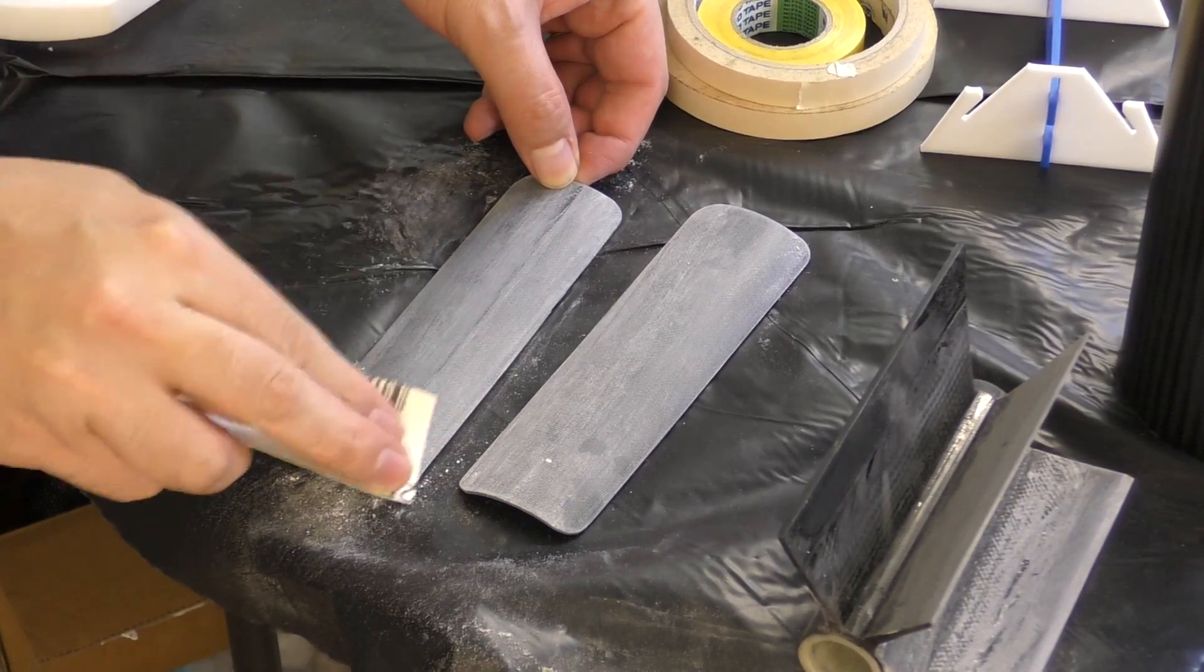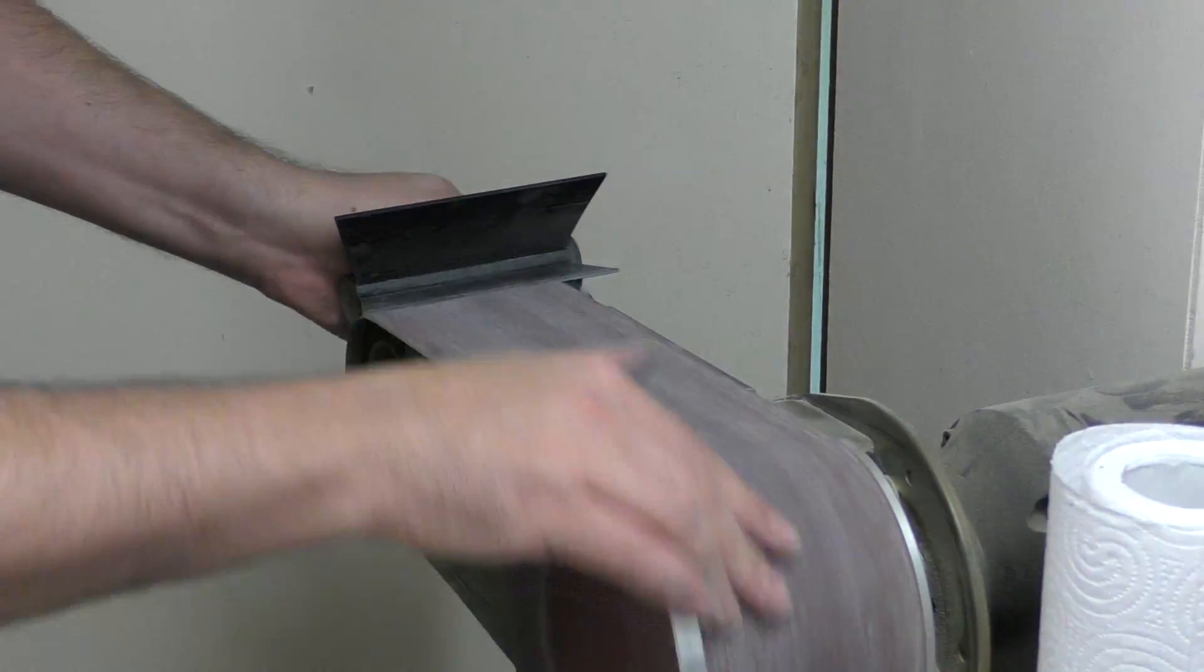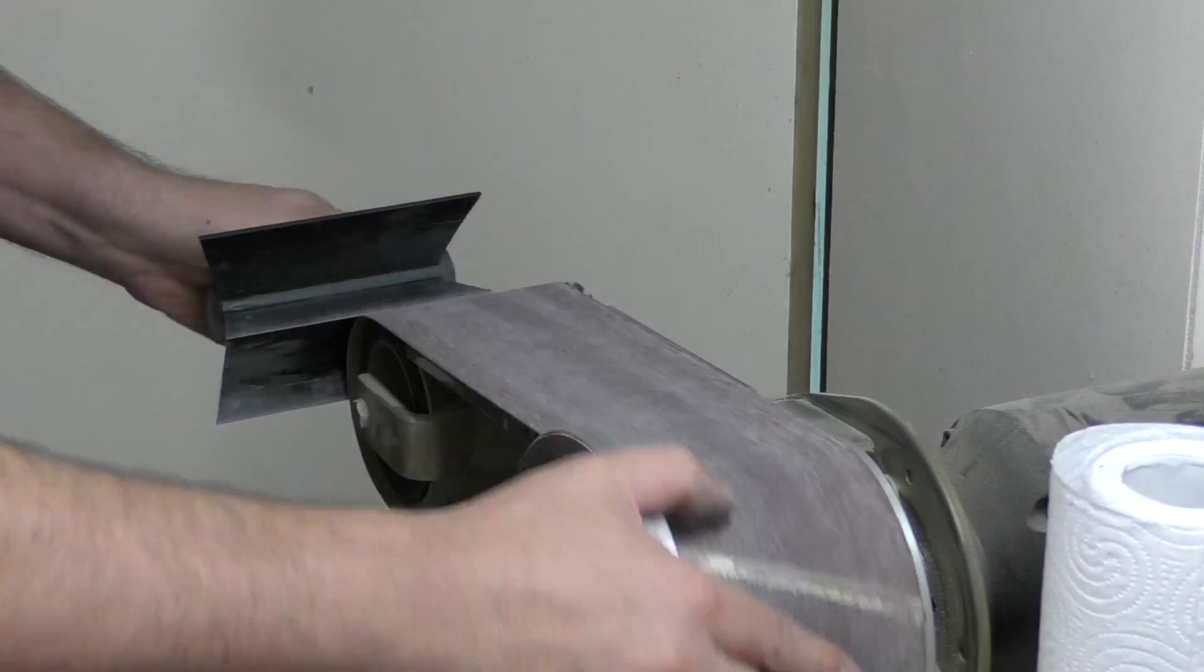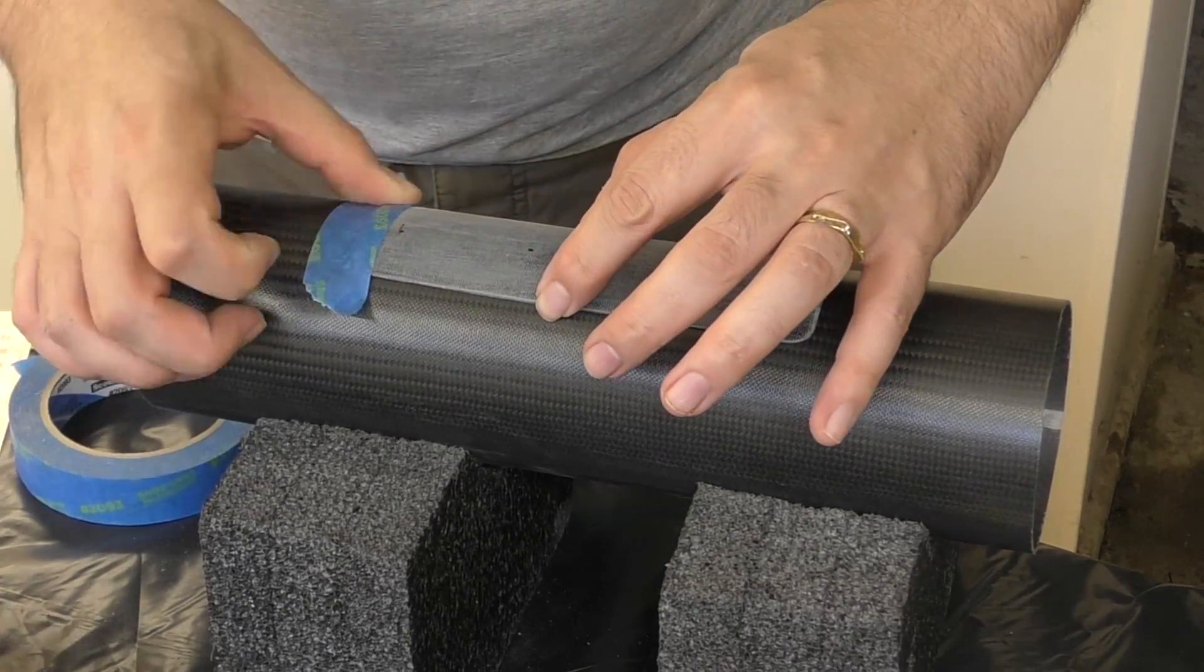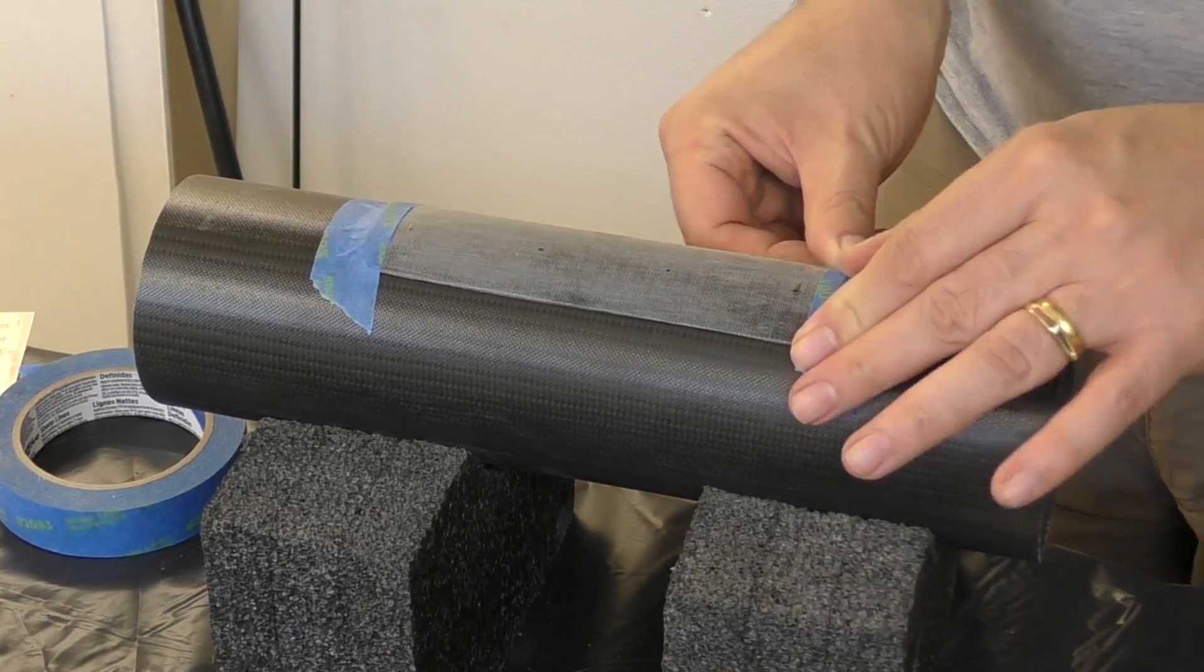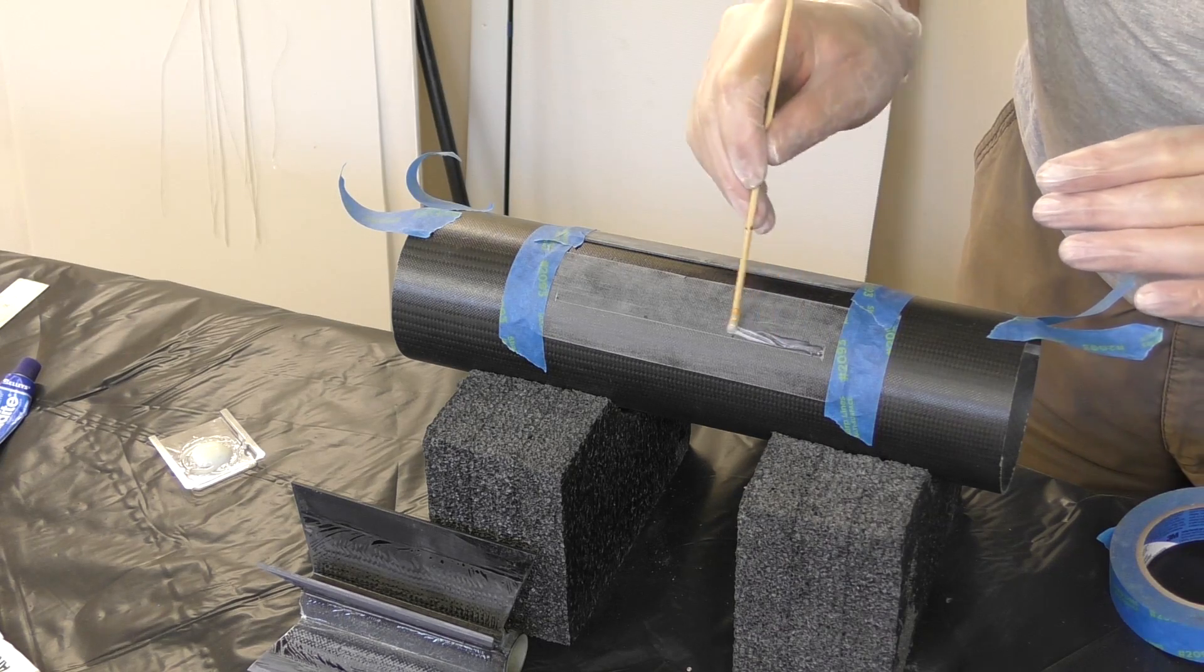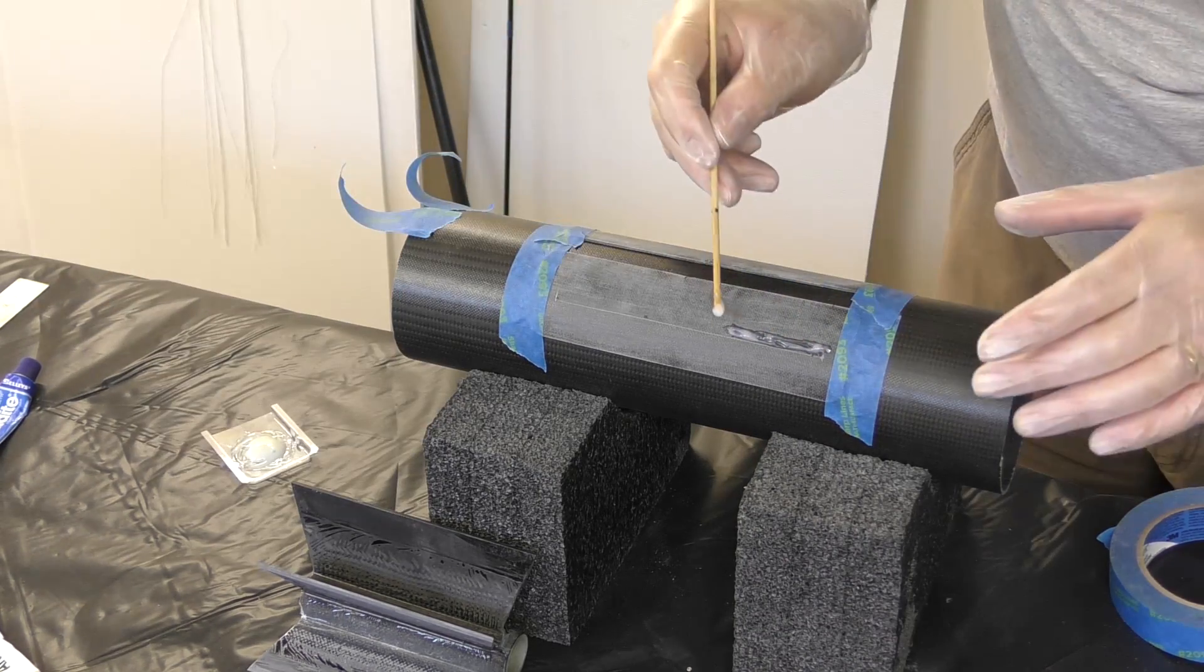Once they're shaped we give them a good sand. Here we're beveling the brackets to give them a greater bonding surface area. Then we temporarily attach them to a tube yet from another test pressure chamber to get the right orientation, spacing, and more importantly alignment. We tack the brackets onto these mounts with super strength epoxy again and leave them overnight to cure.